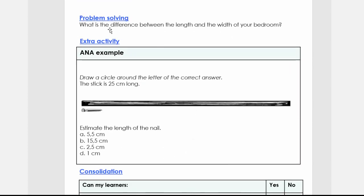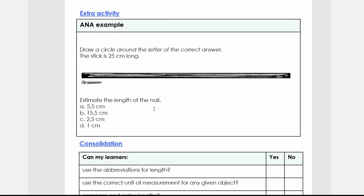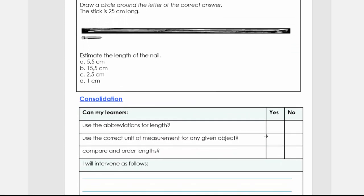Then we're going to do the problem solving. Remember, this extra activity is an example that typically comes from an old exam or test paper. Pause here, work through them, and then with the consolidation, if you have all yeses, you're going to carry on with the next lesson. If you've got some no's, you're going to repeat, revise certain questions or activities, or contact us at SA Teacher.